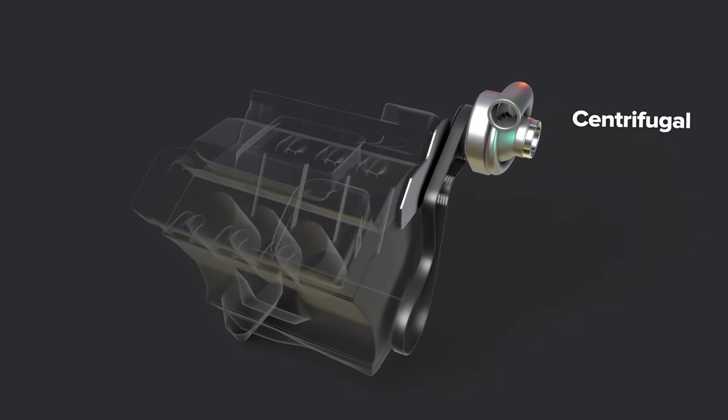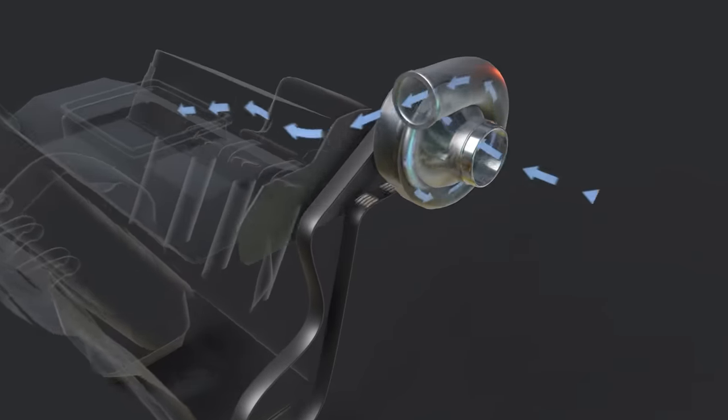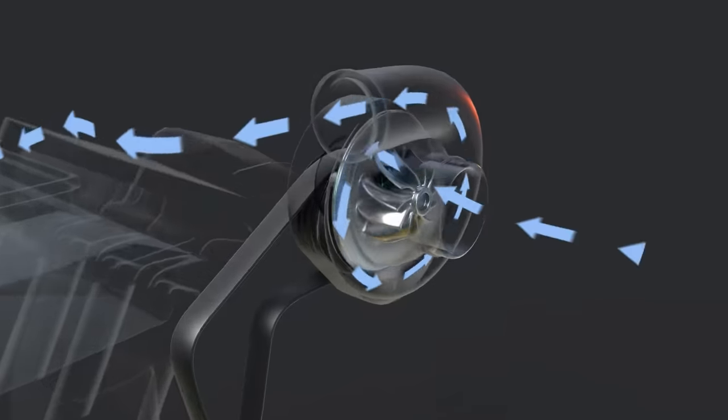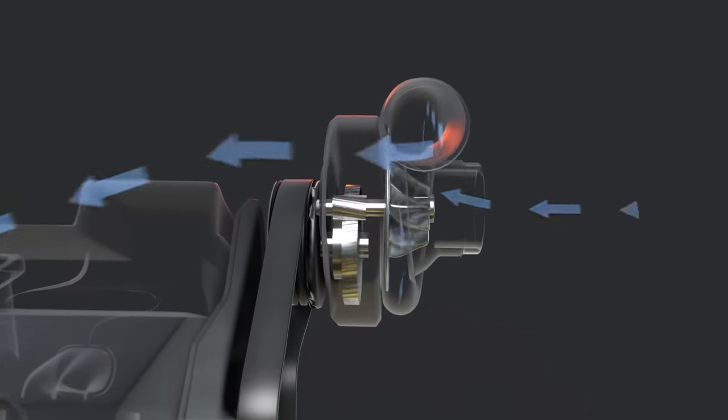Centrifugal: Centrifugal superchargers have much in common with the turbo design concept, though they are still mechanically driven. They produce an exponential power curve and are often tuned to make full boost at engine redline.